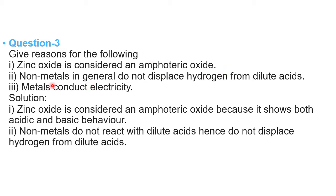Question number three: give reasons why zinc oxide is considered an amphoteric oxide. First, let us define an amphoteric oxide — it is an oxide which shows both basic character as well as acidic character. With an acid, it acts as a base; with a base, it acts as an acid. Such oxides are called amphoteric oxides, and the best example is zinc oxide.